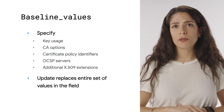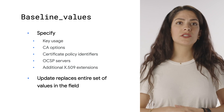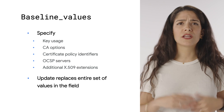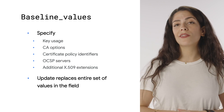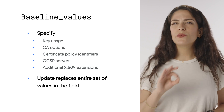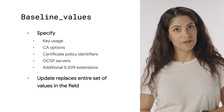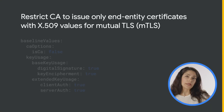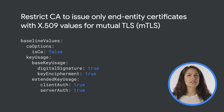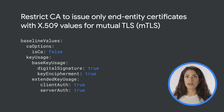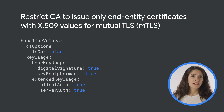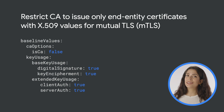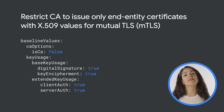Baseline values allow you to specify key usage, CA options, certificate policy identifiers, OCSP servers, and other X.509 extensions. If you update any part of the baseline values field, the update replaces the entire set of values in the field. For example, you can restrict a CA to issue only end-entity certificates with X.509 values for mutual TLS or mTLS. Restricting the issuance controls to only what is expected is a good principle to follow to avoid accidental or malicious issuance of unexpected certificates.